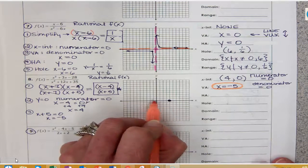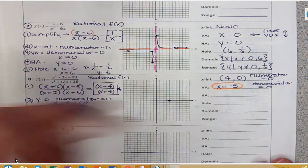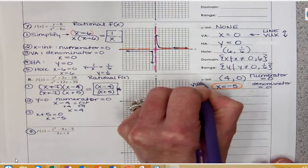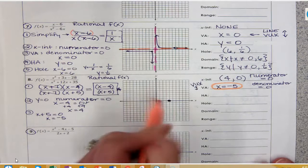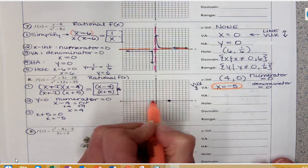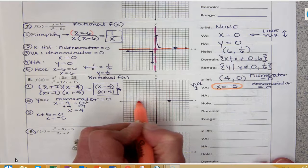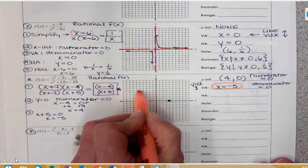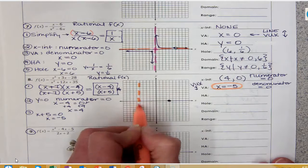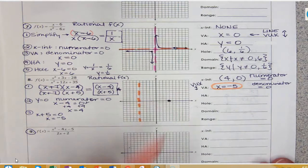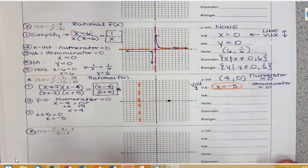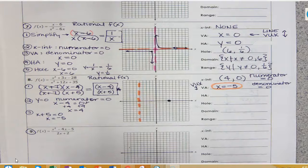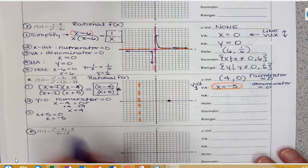I can plot that using my good friend VUX — my vertical line. I go to x equals negative 5 and draw a vertical dashed line to show this is a boundary that can never be crossed. If it were crossed, that would mean my denominator equals 0. So I've got my vertical asymptote.